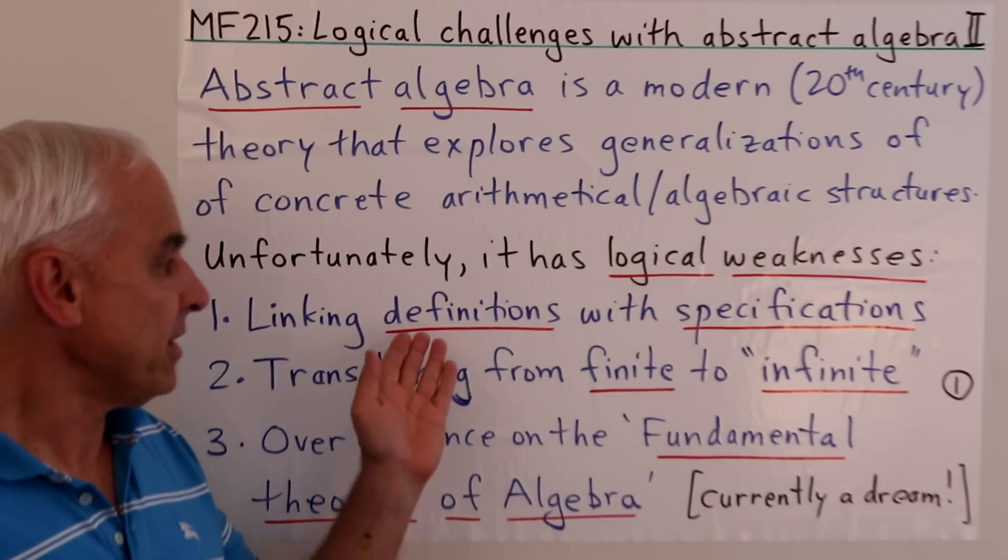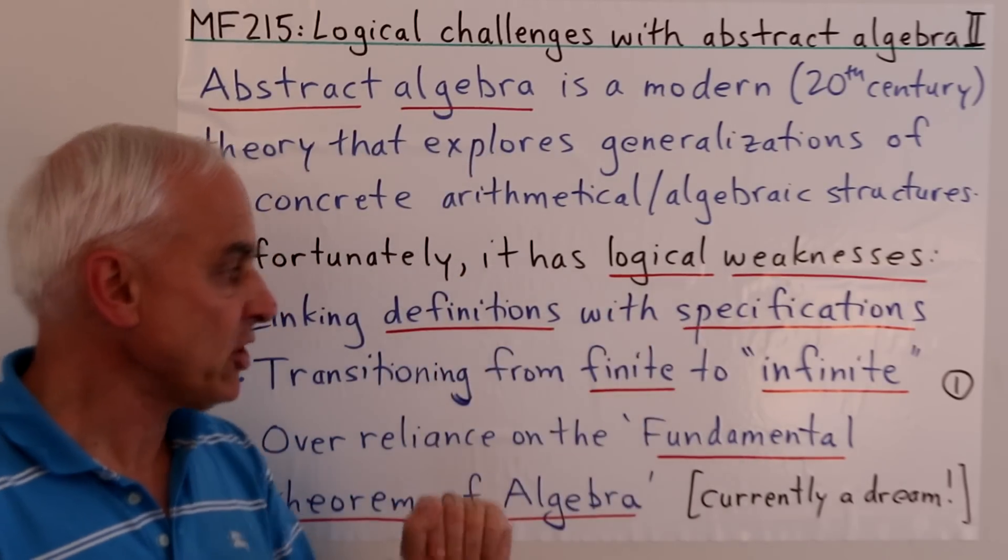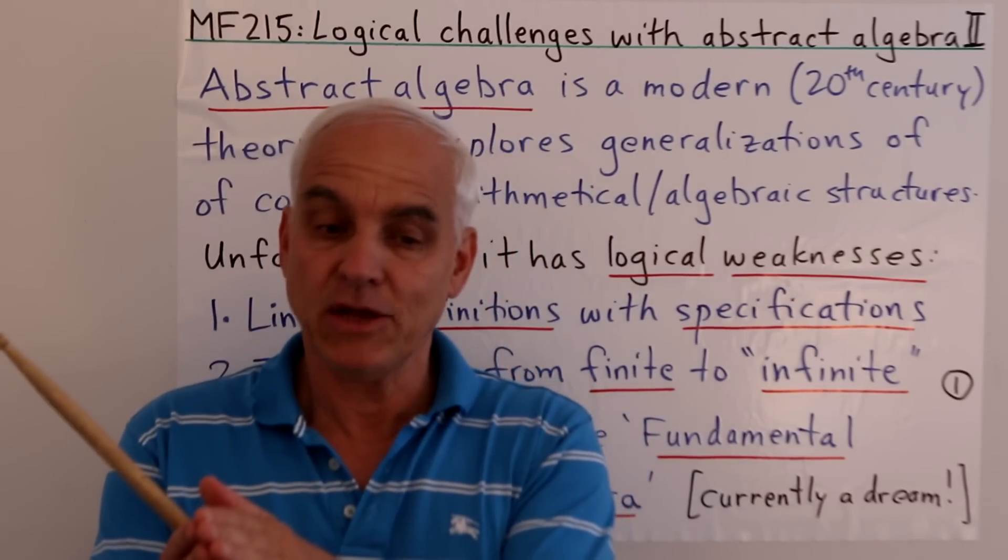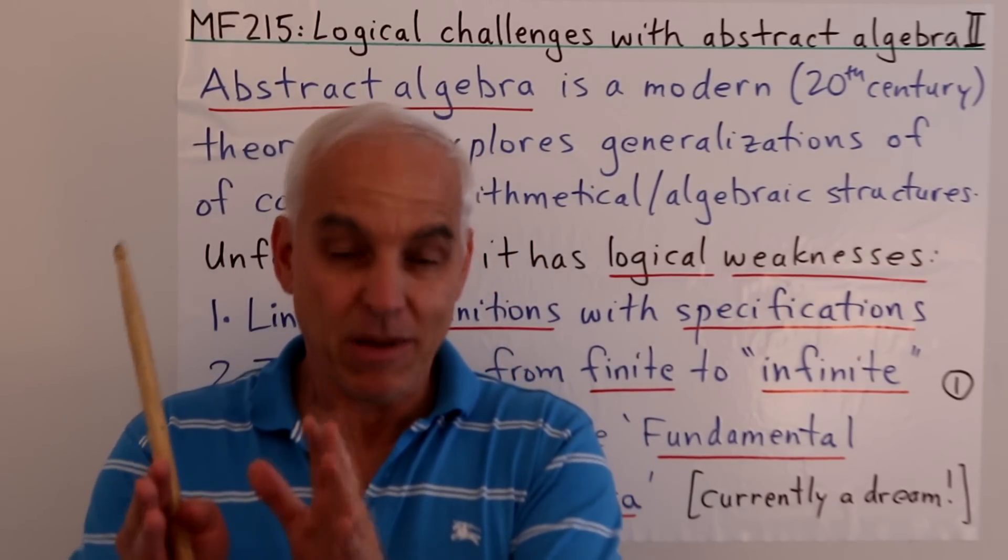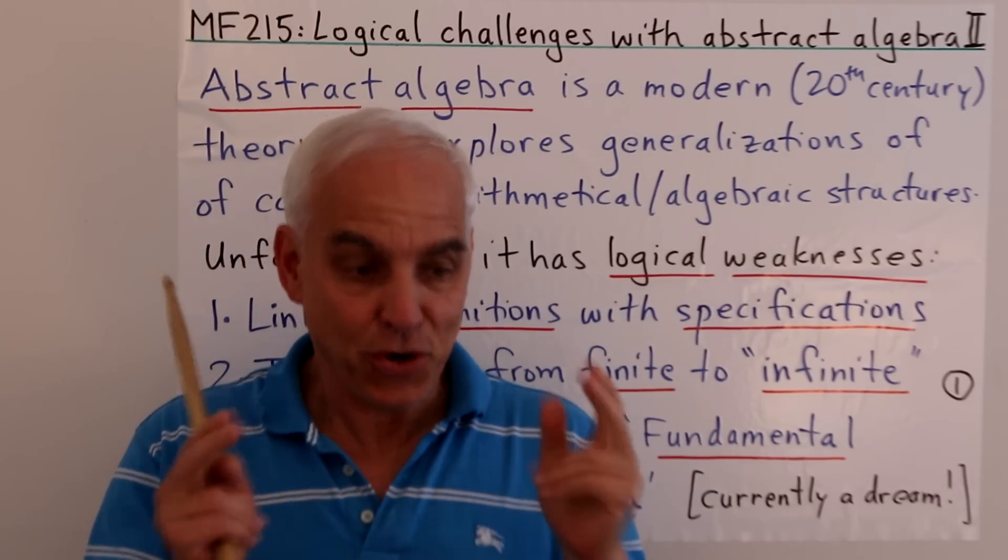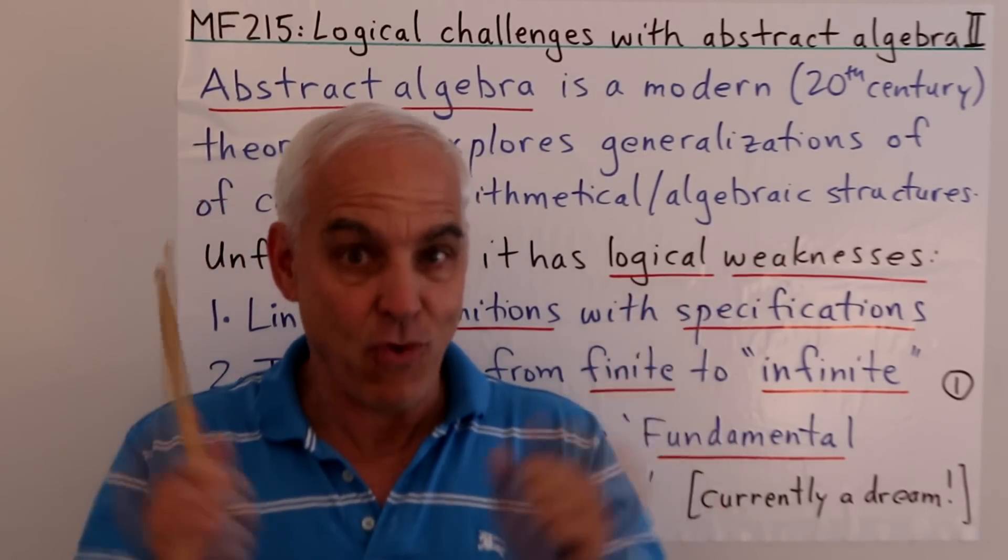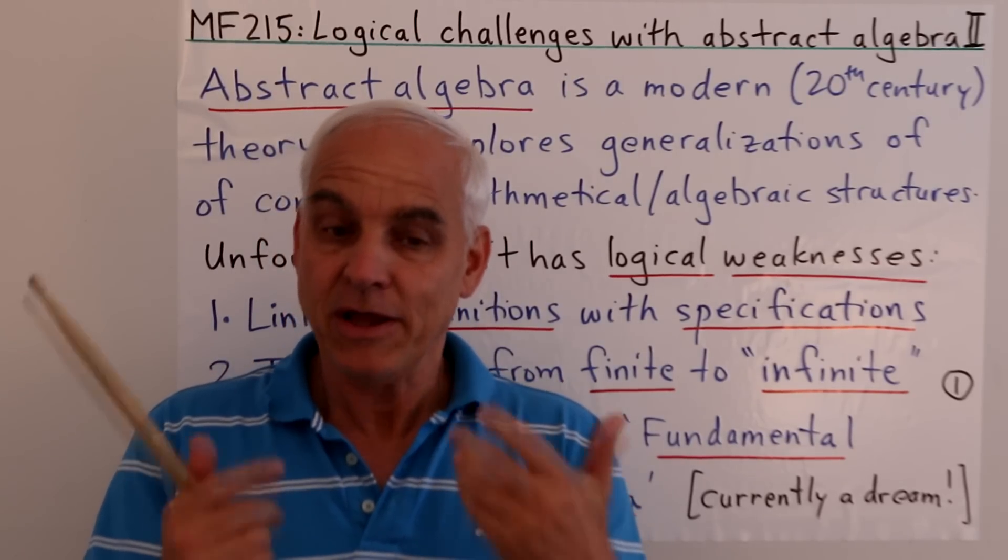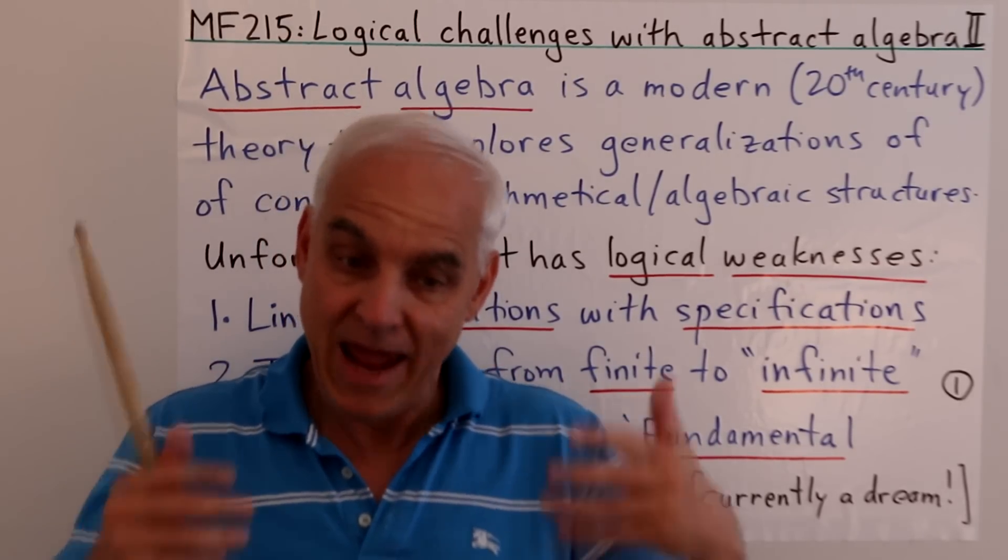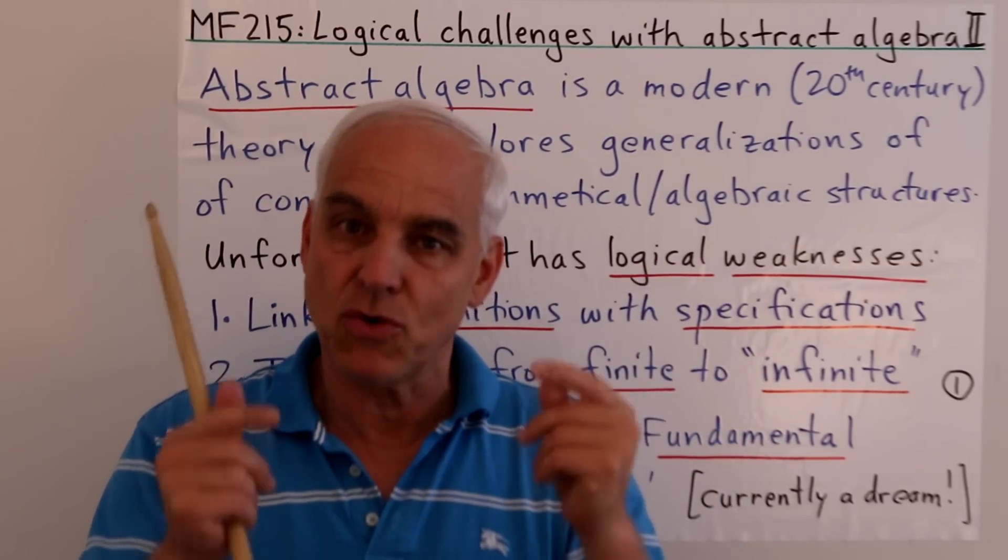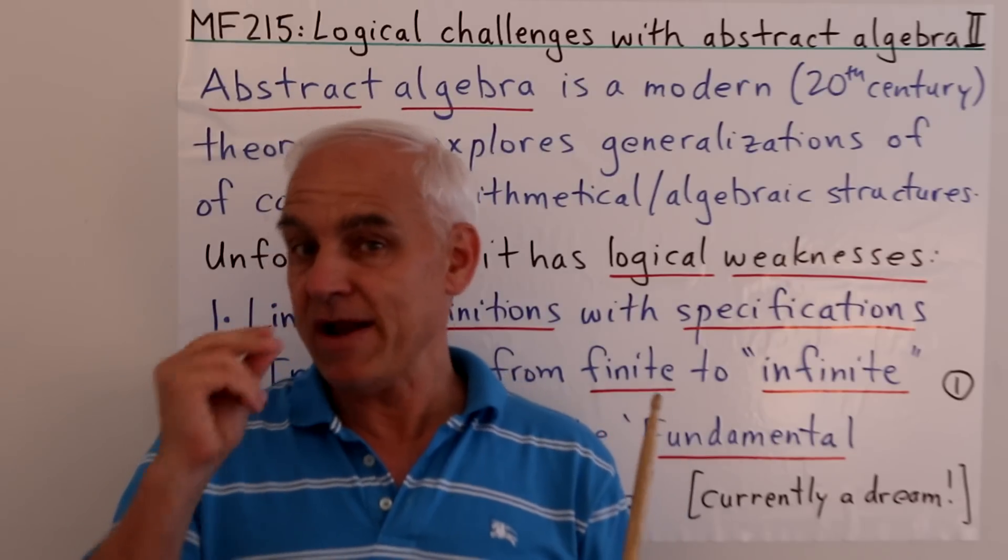Last time we talked about the issues with definitions and specifications. Today I want to concentrate on the very big jump in trying to go from talking about finite objects to infinite objects. So currently when we say infinite objects, we have quotation marks around them. That's not necessary in all cases, perhaps we can create infinite kinds of objects, but we have to do so carefully and ultimately in a finite way.